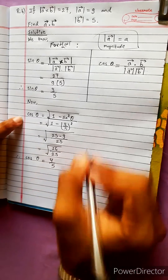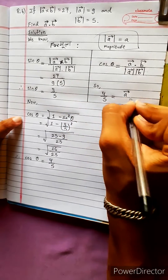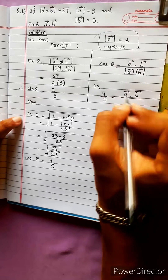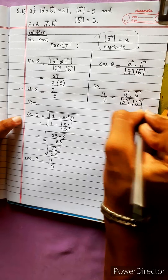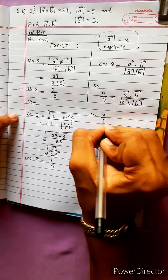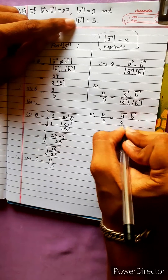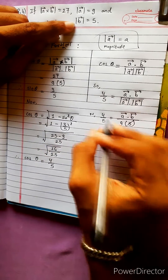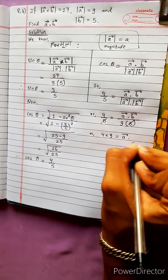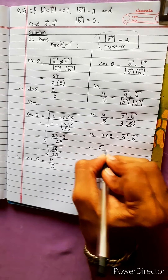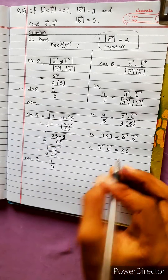So cos theta value is 4 by 5. Therefore, 4 by 5 equals A vector dot product B vector divided by the magnitudes 9 and 5. So 4 into 9 equals A vector dot product B vector. Therefore, A vector dot product B vector equals 36.